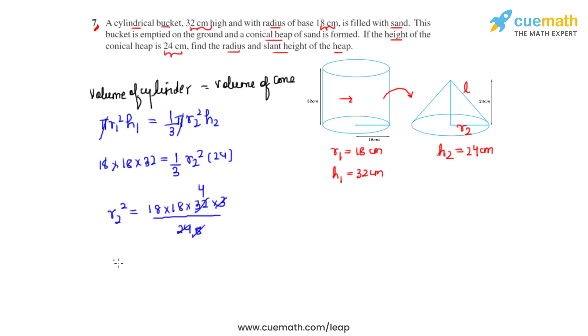So now we get the radius which is r2 of the conical heap to be equal to 36 centimeters.